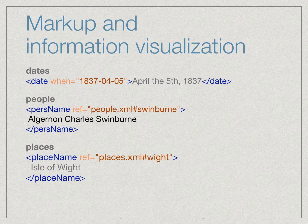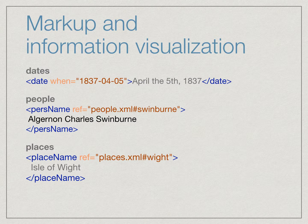In the first example, we've taken a date that appears in a text written in a human-readable form — April 5, 1837 — which may not be as useful to a computer processing program. The encoding here identifies this phrase as a date and includes the when attribute where we've put that date in a standardized format that the computer can use more easily.